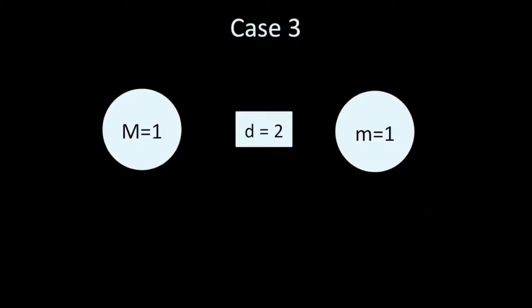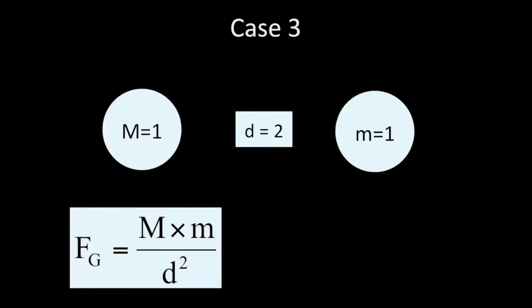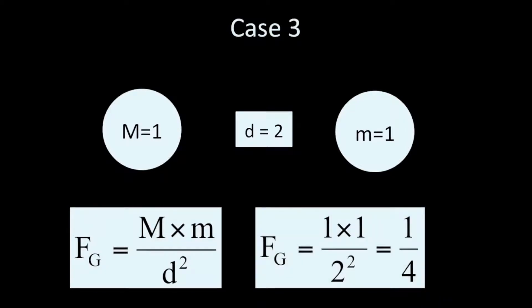Now I've put both masses back to one, but I've increased the distance between them by two times, so the distance is two rather than one. Using the gravity equation, we get one times one divided by two squared. One times one is one, but two squared is four, so the force of gravity is one over four. When the distance doubled, the force of gravity went down by four times. This is why gravity is sometimes called an inverse square law — the force is inversely proportional to the square of the distance.